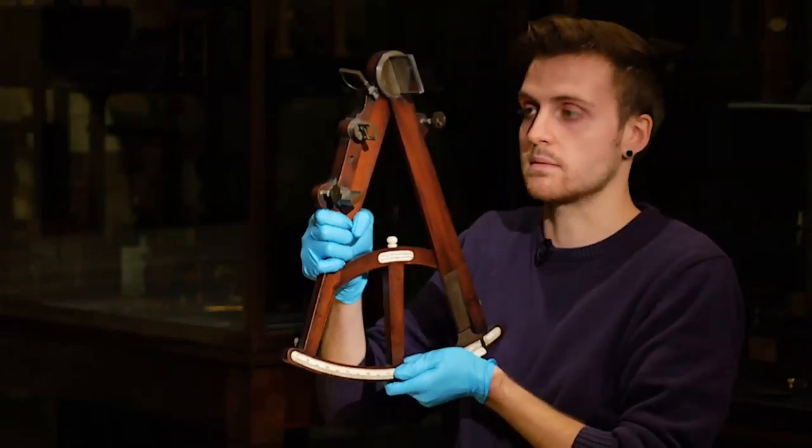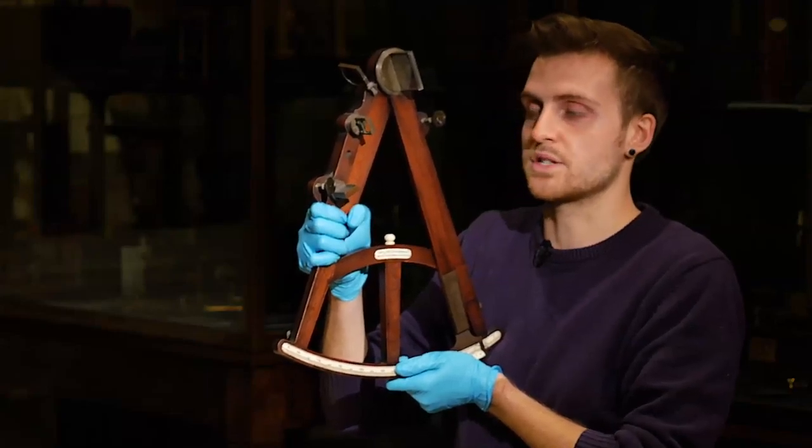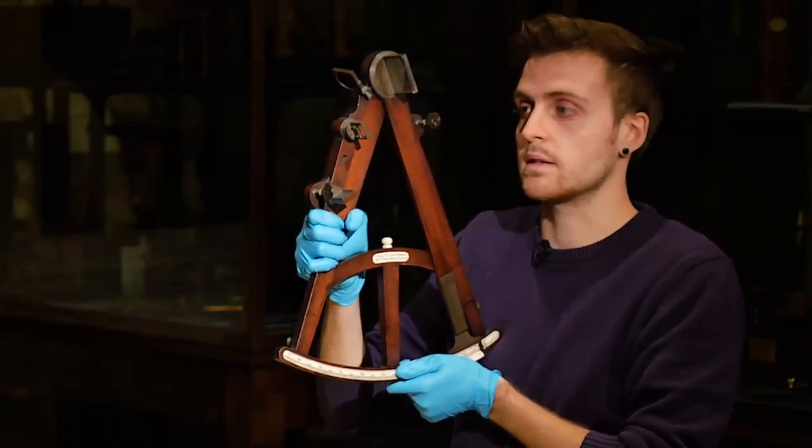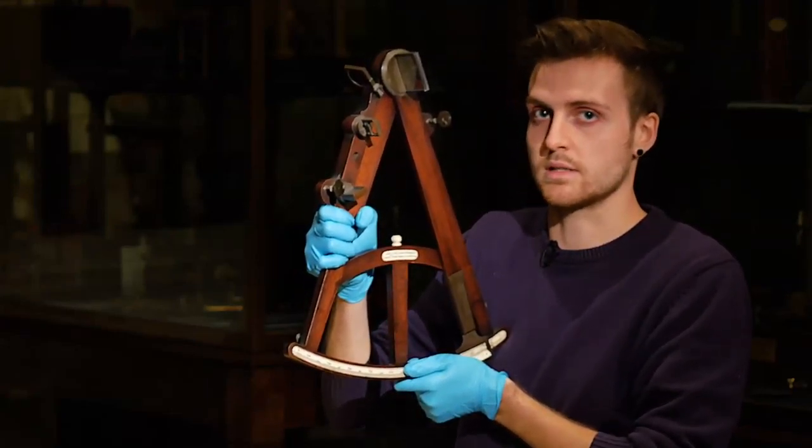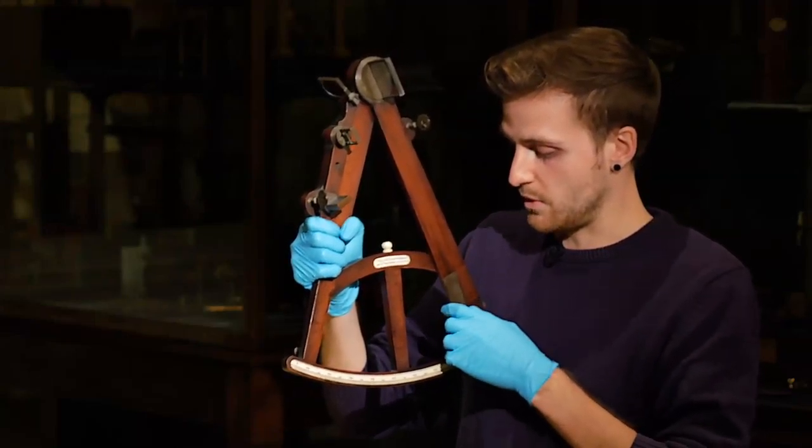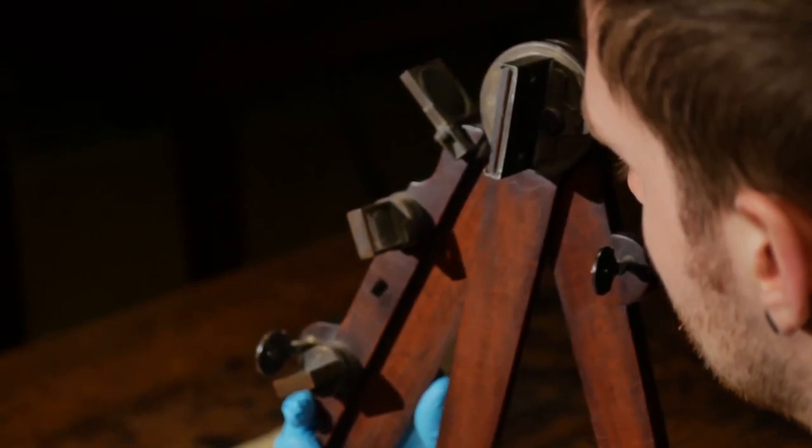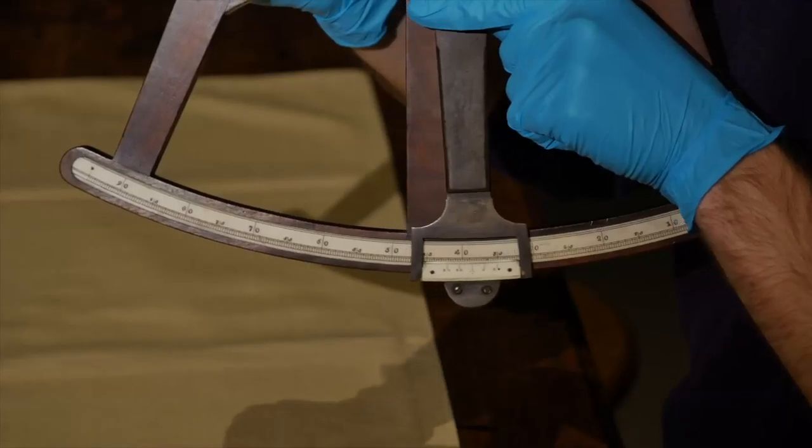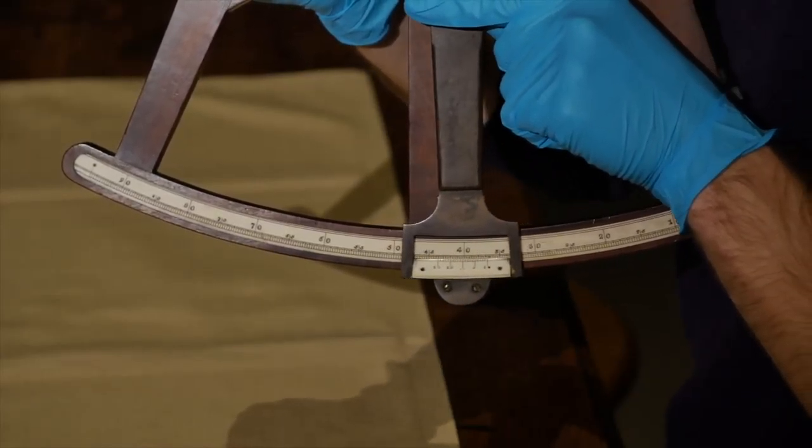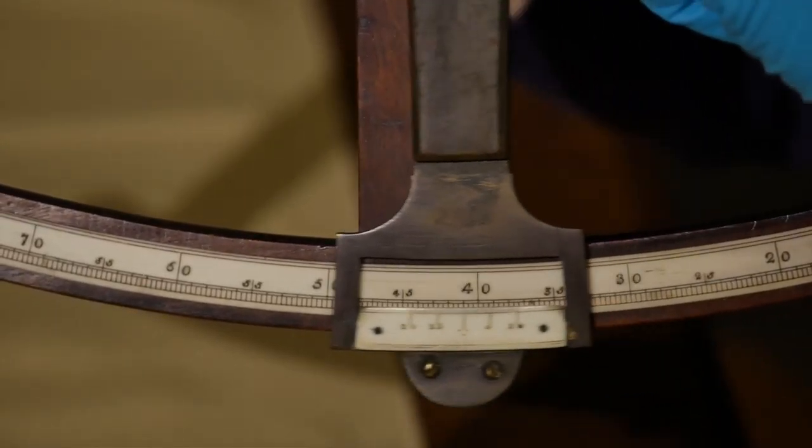In order to measure the altitude of the sun, its image had to be aligned with the horizon. This was done by moving this index arm, which controls the tilt of this first mirror. The extent to which this arm had to be moved would indicate the altitude of the sun.